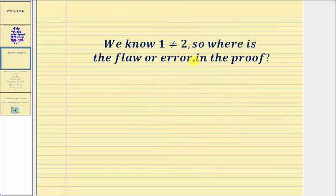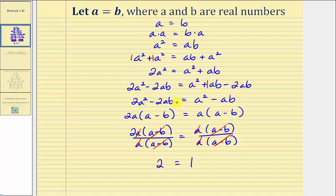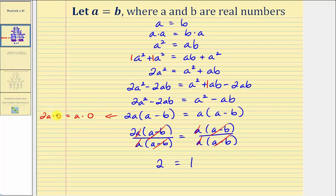But again, we know that one doesn't equal two, so where is the flaw or error in this proof? By analyzing our steps, remember A equals B, and therefore A minus B would be equal to zero. So we really have two A times zero equals A times zero — this step is still true. But when we divided both sides by a factor of A minus B, we divided by zero, and division by zero is undefined. Therefore, here is the flaw of the proof: because division by zero is undefined, we cannot divide by the quantity A minus B, and therefore this proof is invalid — one does not equal two.